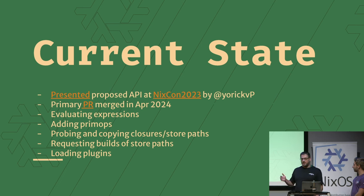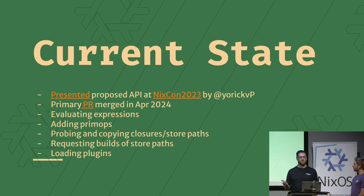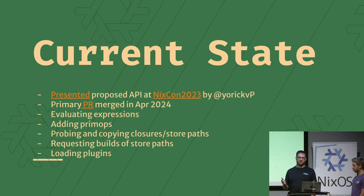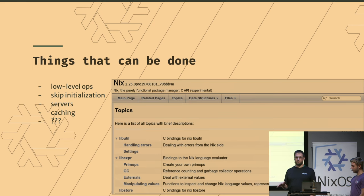So the current state: basically last year at NixCon, this was presented as a proposal by Yorick. It walked through how someone could use this and the motivations behind it. Since then it got merged by the team and you can do a few things - you can evaluate expressions, you have prim ops, you can work a little bit with the stores. The support for this is getting better and better. It's still not all the way there. It's very much in flux in terms of exactly what the API is, what's exposed and what's not, but we'll give you a big overview.